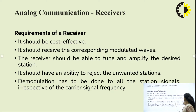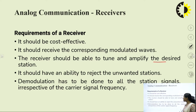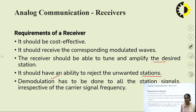The receiver should be able to tune and amplify the desired station. We can make a receiver susceptible to a particular frequency band only, receiving signals in that band — that is what we call a channel. It should also have the ability to reject unwanted stations; if I tune to a particular channel, all other frequencies must be rejected. The receiver should be capable of performing demodulation, also called detection techniques.